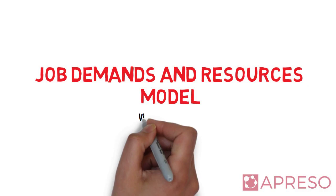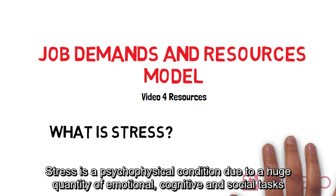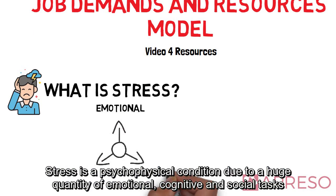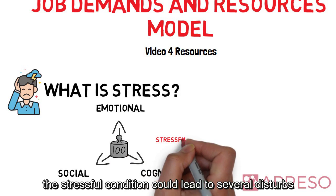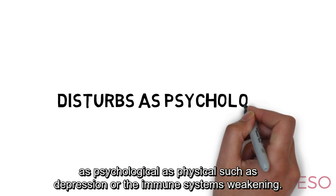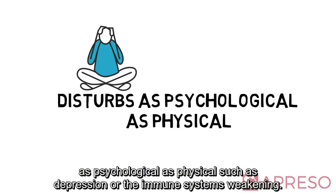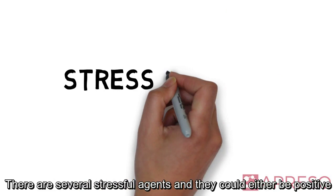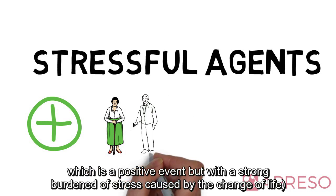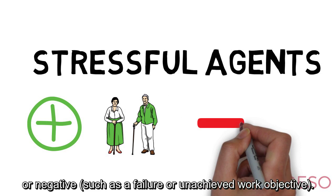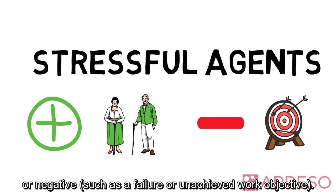Job demands and resources model. What is stress? Stress is a psychophysical condition due to a huge quantity of emotional, cognitive and social tasks perceived by the person as excessive. The stressful condition could lead to several disturbances, both psychological and physical, such as depression or the immune system's weakening. There are several stressful agents and they could either be positive, such as retirement — a positive event but with a strong burden of stress caused by the change of life — or negative, such as a failure or unachieved work objective.